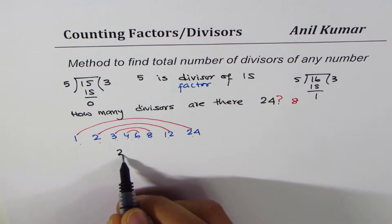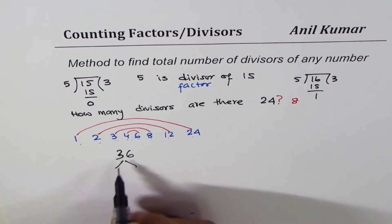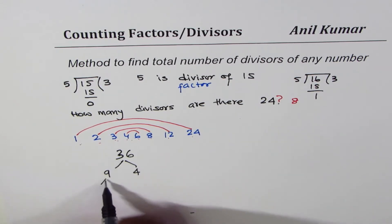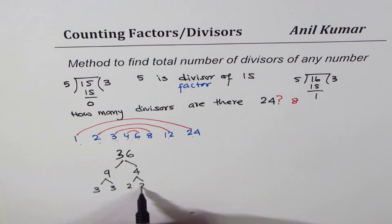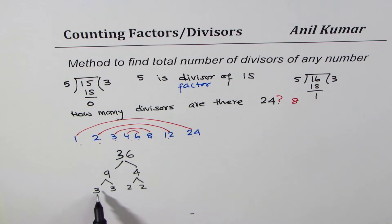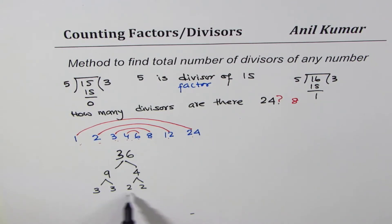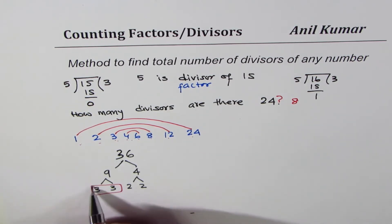Let's take 36 and do its prime factorization. We can write 36 as 9 times 4, where 9 is 3×3 and 4 is 2×2. So the prime factors are 3, 3, 2, 2. Combinations of these will give us all the divisors. We may take one 3, two 3s, or none of the 3s — that is three choices.